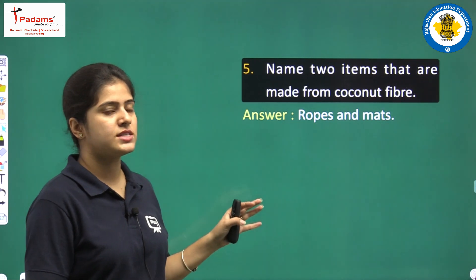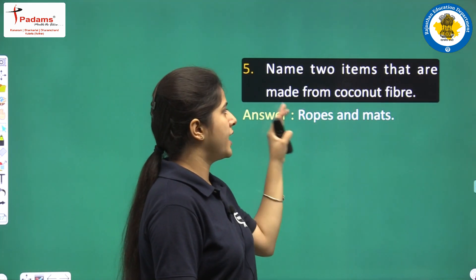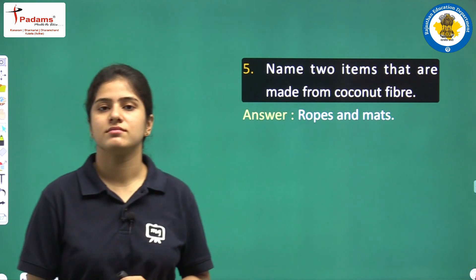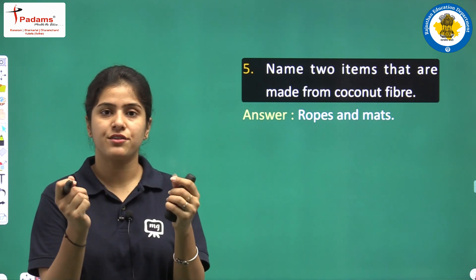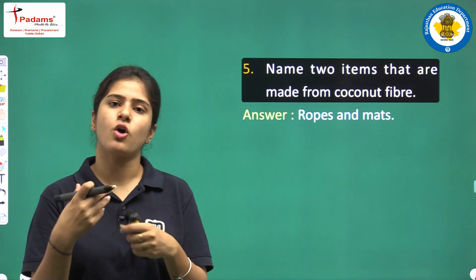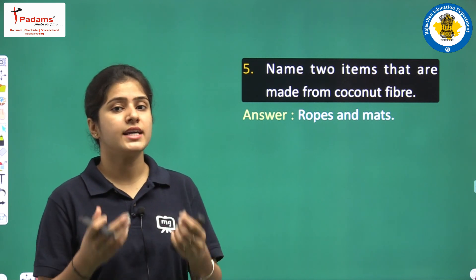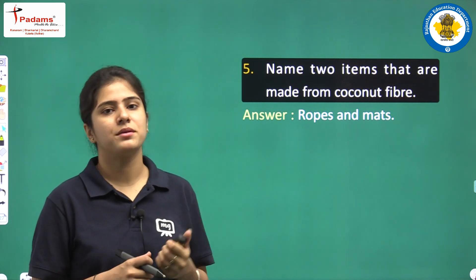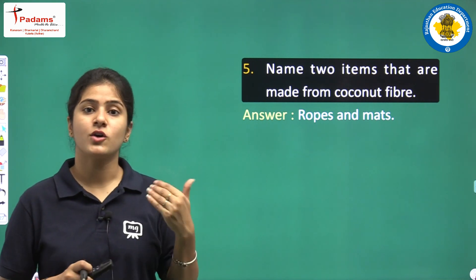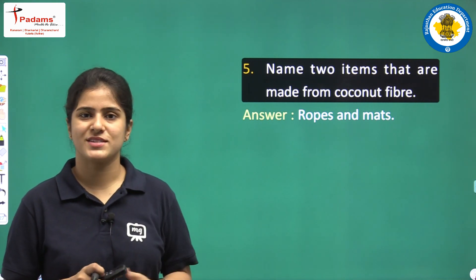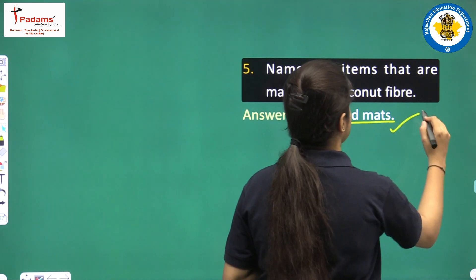Next: Name two items that are made from coconut fiber. You have seen the outer covering of coconut — that is called coconut fiber. Two things we make from coconut fiber are ropes and mats.